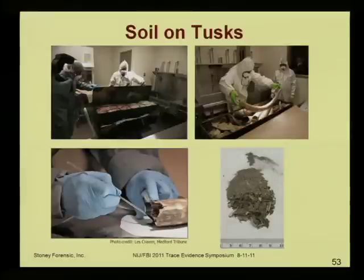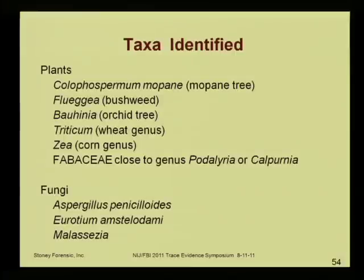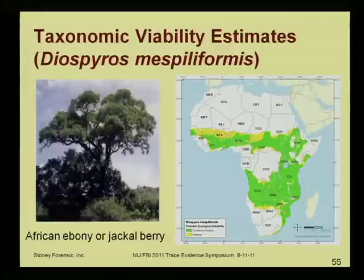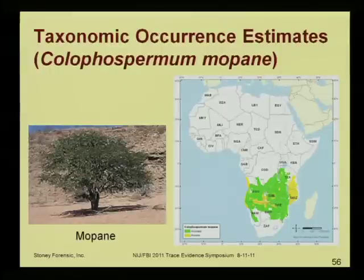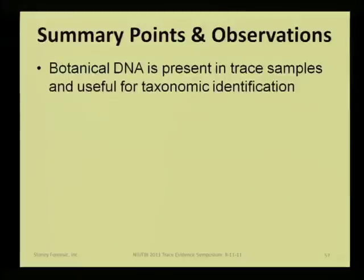Another case we worked on for the Fish and Wildlife Forensics Laboratory involved some tusks. We got some soil from them and identified various plants and fungi in the dust. One way we'd use that is to have an estimate of the viability for a species — where would it grow? Based on the taxonomic identification and the conditions you can map within a continent, what areas can be excluded where that tree could not possibly survive? Some types of trees, such as this endangered species, have a well-known distribution that you can plot out too.